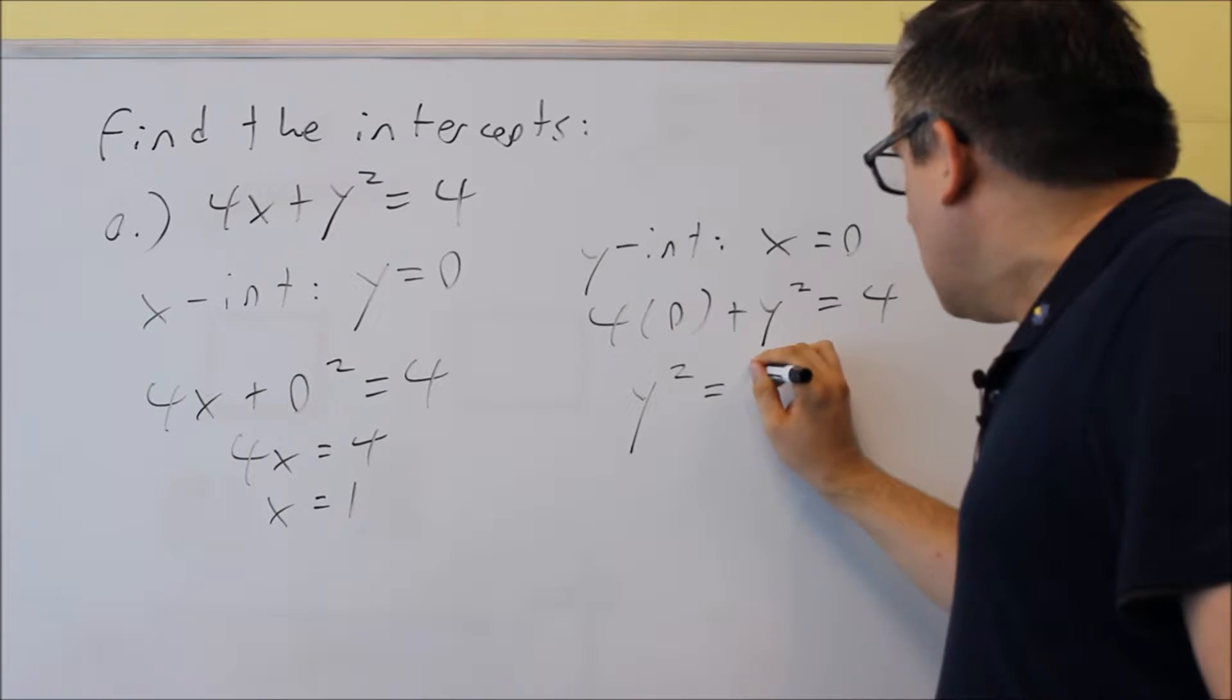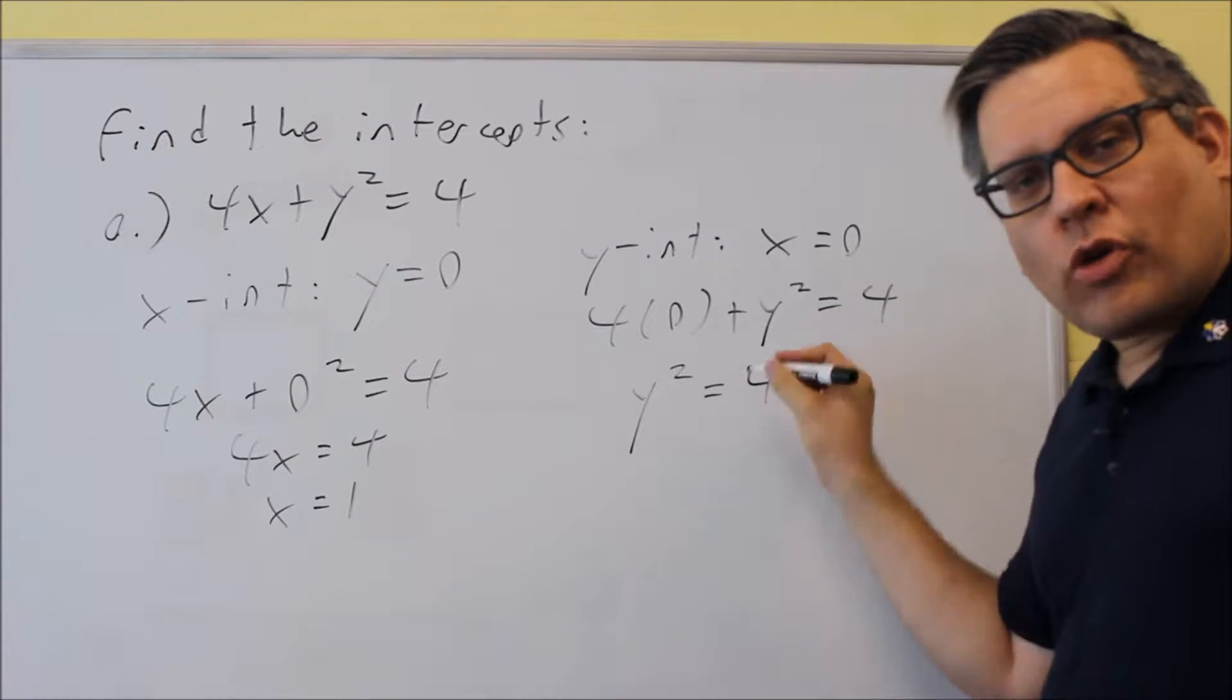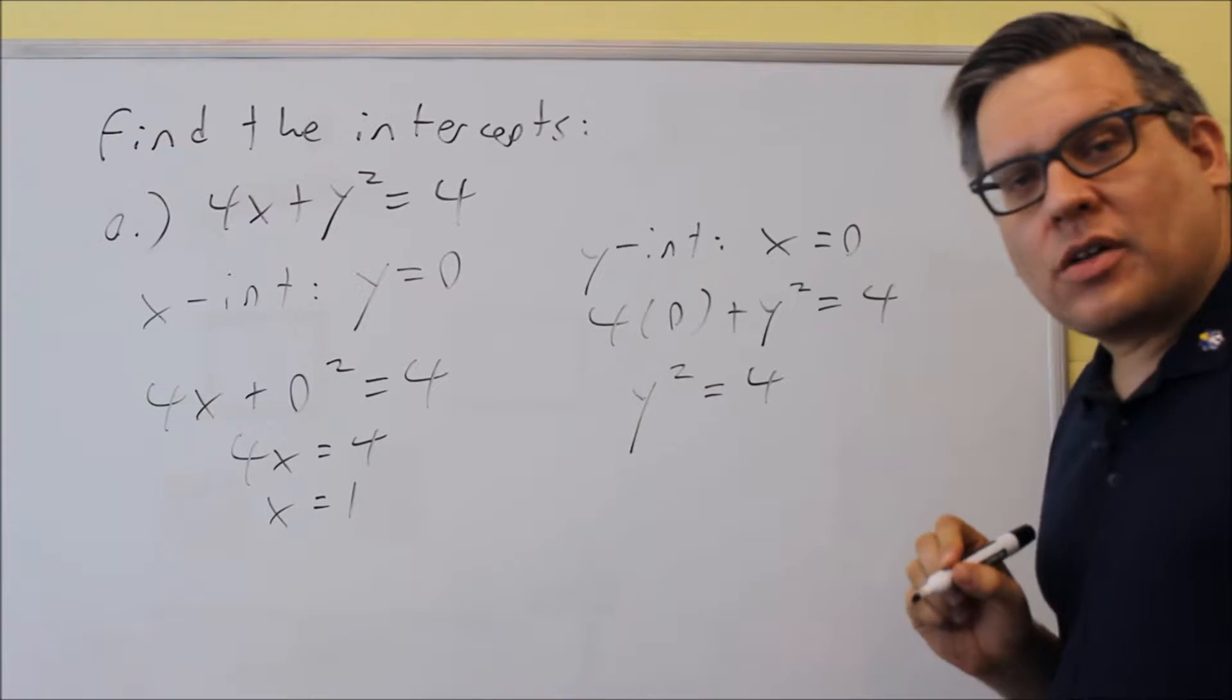If we simplify that, we get y squared equals 4. Remember, for this, you've got to take the square root of both sides to get y by itself. Now when you do,